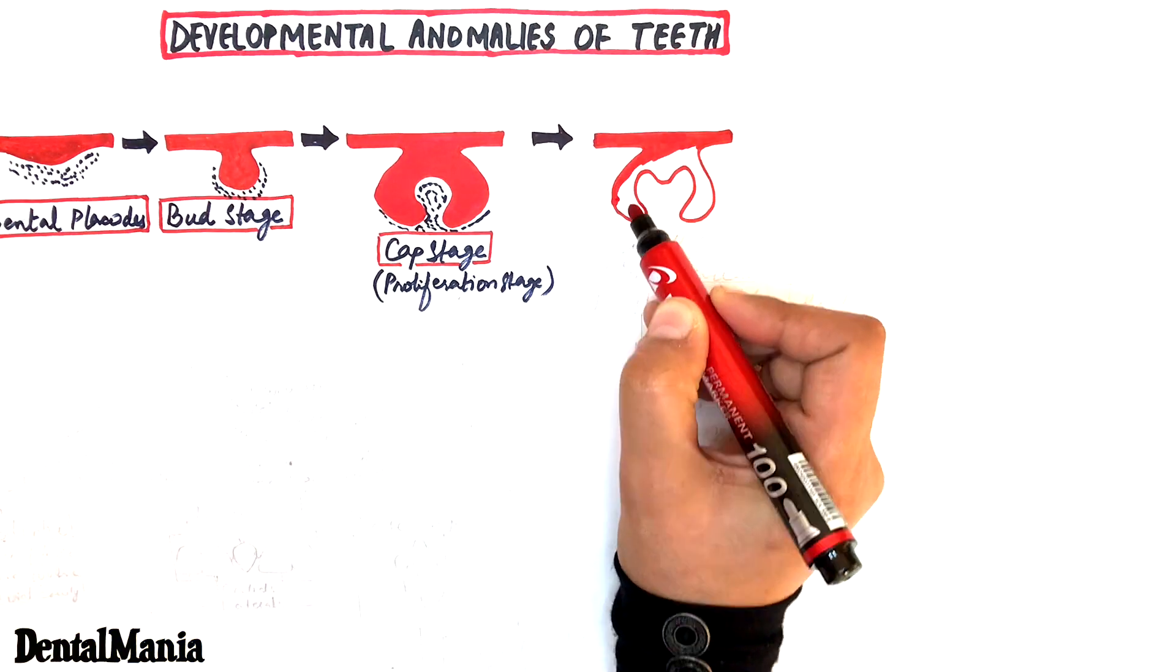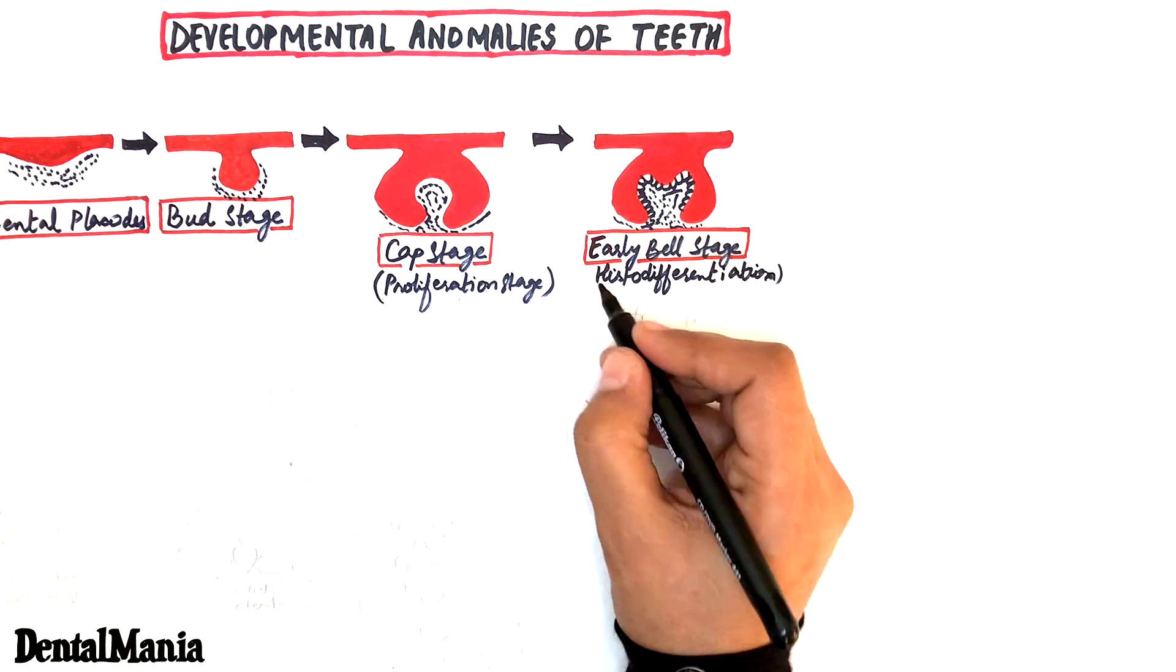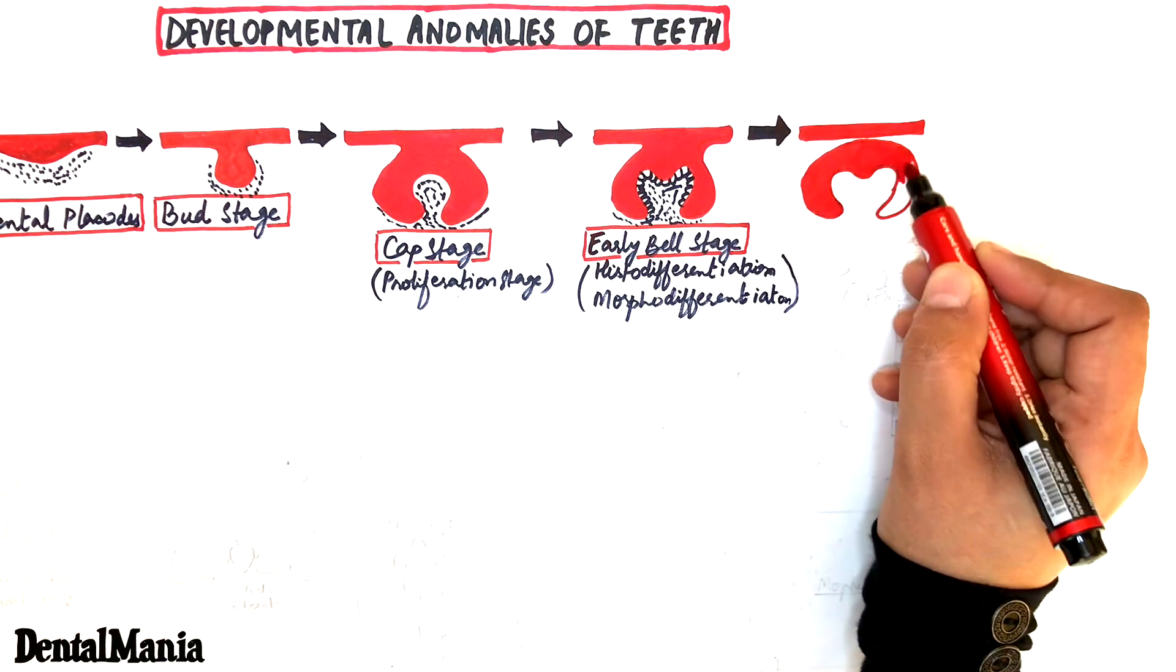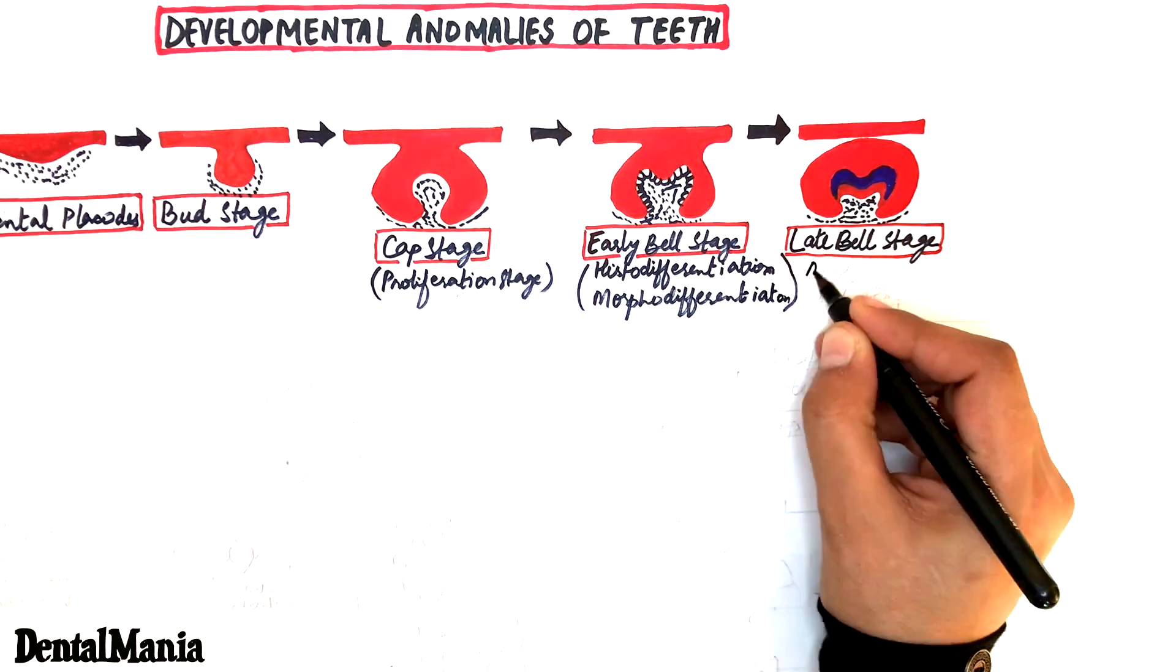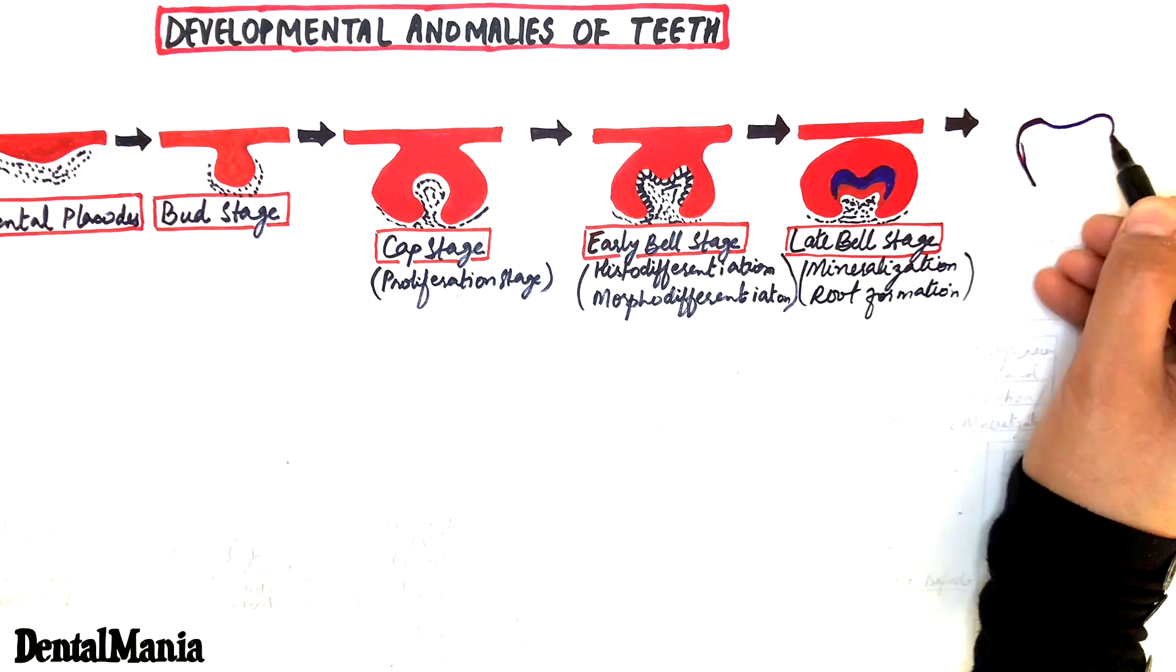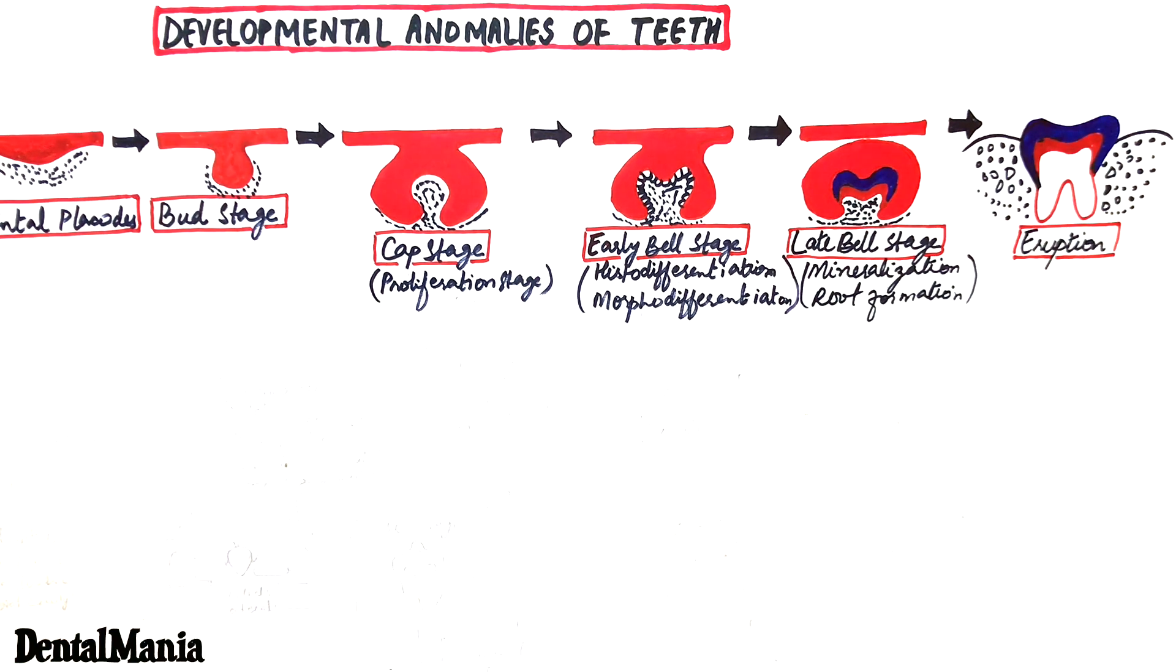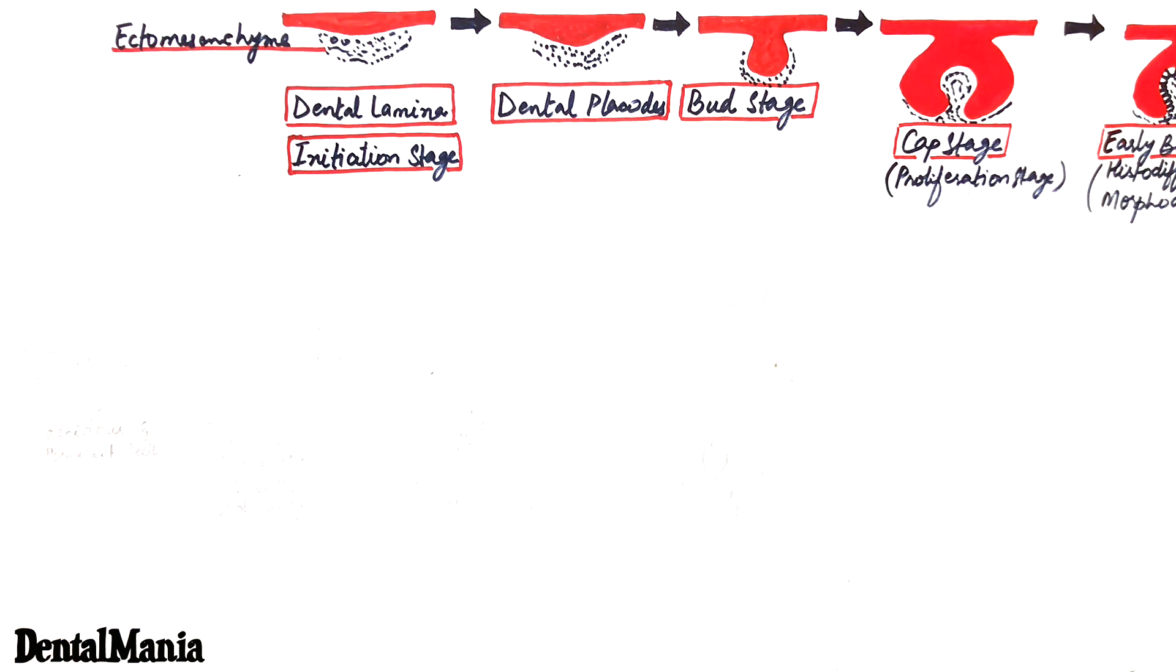Then we had the early bell stage which was characterized by two important events called the histodifferentiation and the morphodifferentiation. Then it entered the late bell stage which was characterized by initiation of mineralization and beginning of root formation and eventually the tooth erupted into the oral cavity. Let's now look at the developmental anomalies that take place during each specific developmental stage.